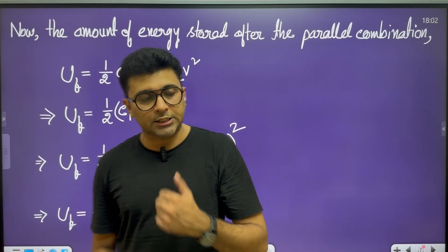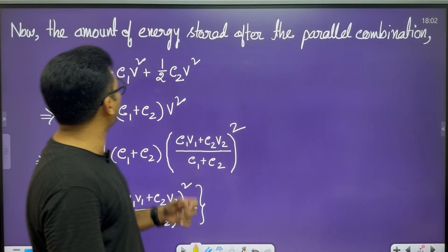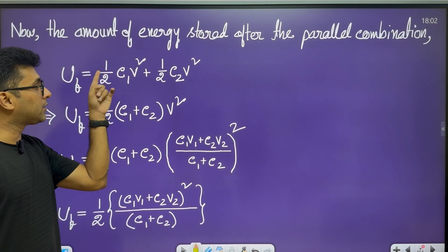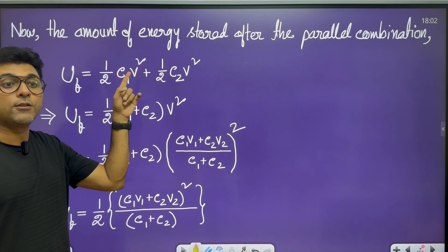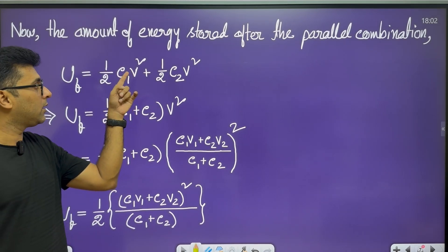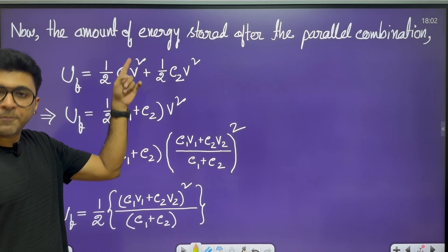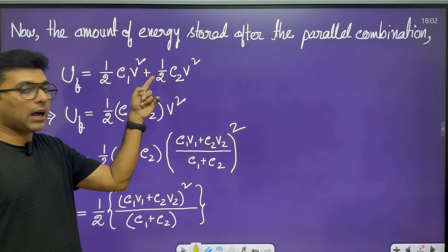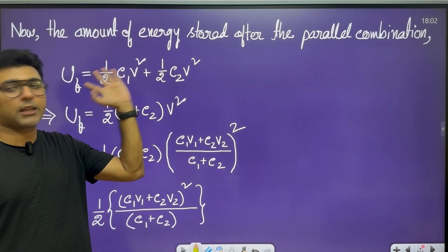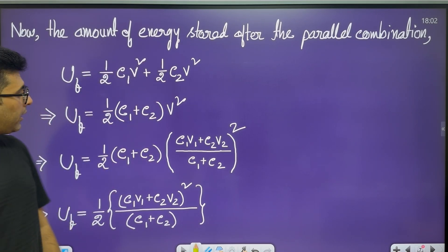The final potential energy Uf equals half C1 into V squared plus half C2 into V squared, where V is the common potential. Taking V squared as common, Uf equals half into C1 plus C2 into V squared.